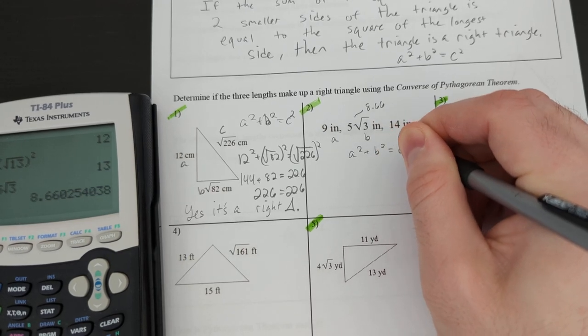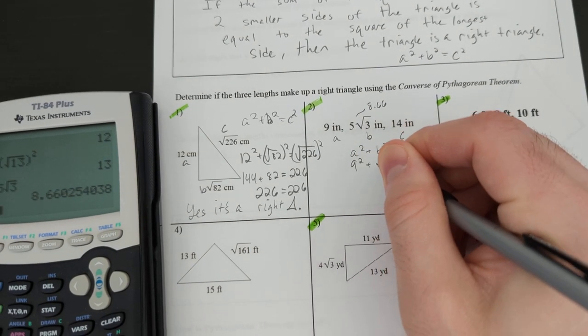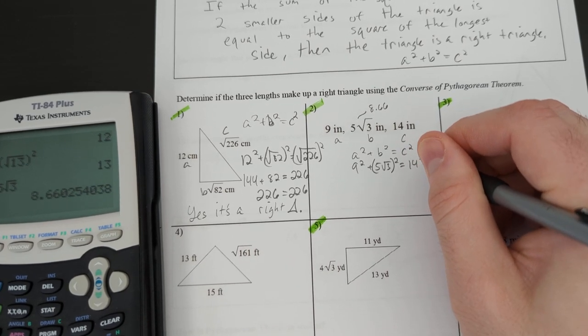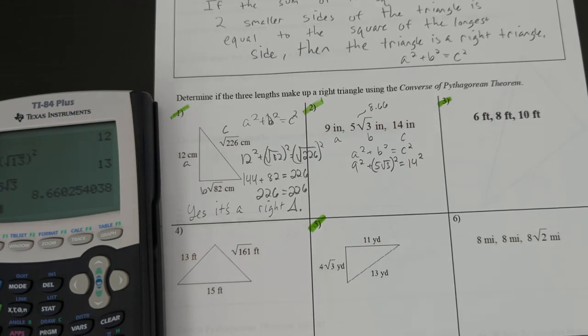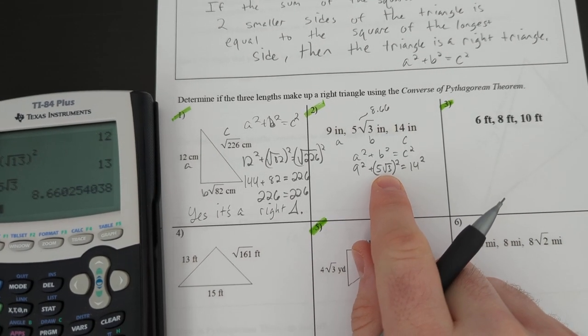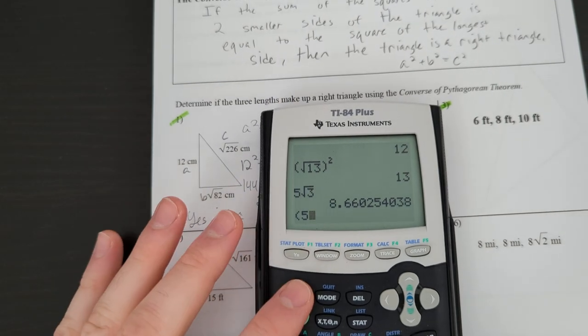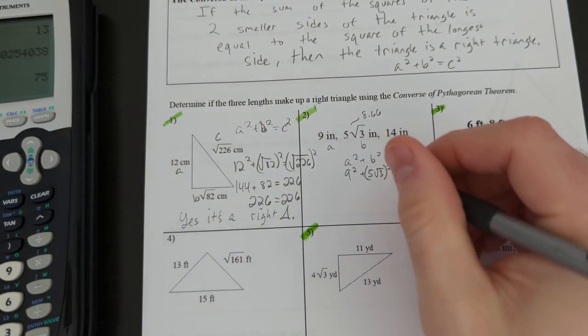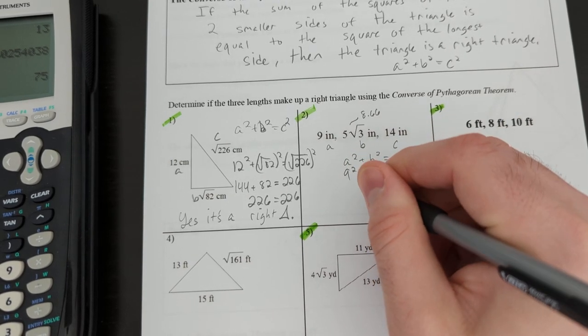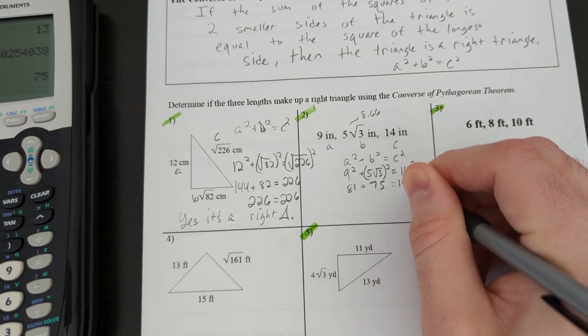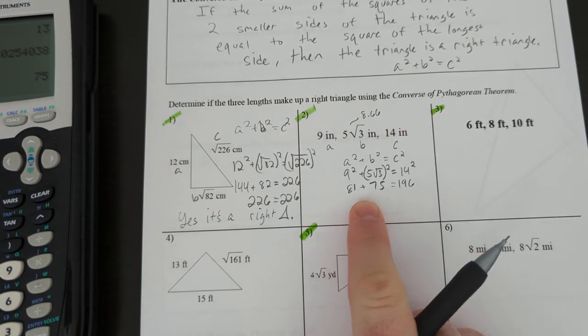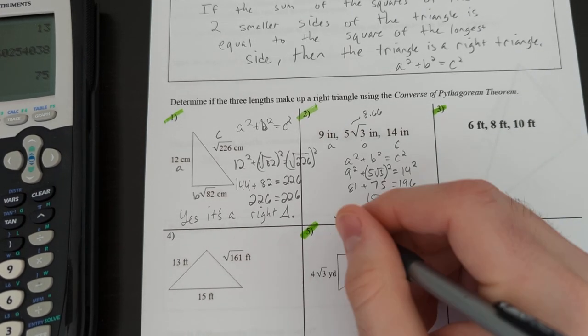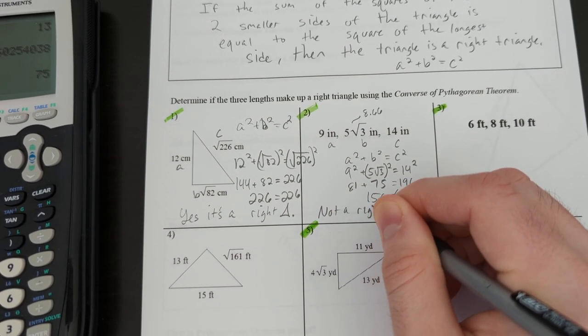So my equation. A squared plus B squared equals C squared. I'm going to do 9 squared. 5 root 3. All of that goes in parentheses. It's very important that you do that. If you don't, you're not going to square the 5 and you're going to get the wrong answer. Now, it doesn't work like before because the radical is not by itself. We do have to type that in. We're going to type in parentheses 5 square root 3 squared. And you get 75. 9 squared we know is 81 from our calculators. 14 squared from our calculators is 196. 81 plus 75, that's 150 plus 6, so 156. And as you can see, those are not equal. So you put not a right triangle.